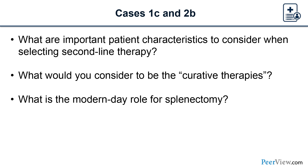We really do try to avoid splenectomy. Splenectomy really should be after 12 months of disease, and even further if the patient is doing well on current therapy. There are obviously life-threatening urgent situations where it is necessary, but we try to avoid it for 12 months. That really is the modern-day role — to try to avoid it.